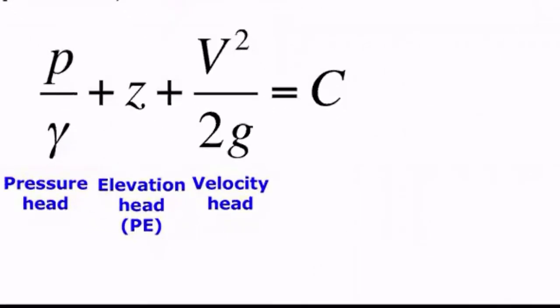Bernoulli equation is the sum of our pressure head plus our elevation head and our velocity head. And it's just a condition for steady flow, flow that is incompressible and inviscid. And it is constant.